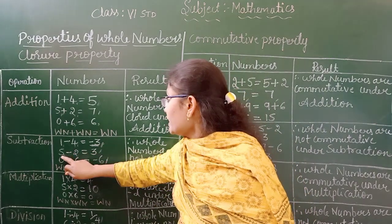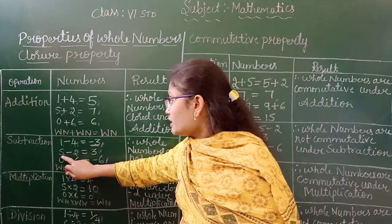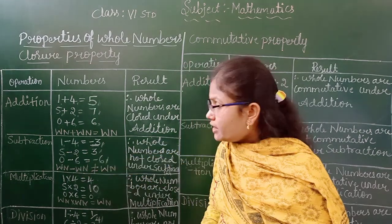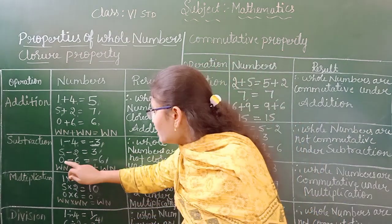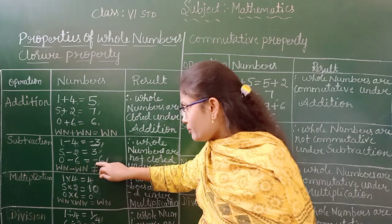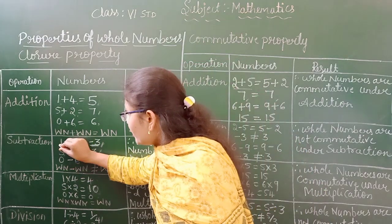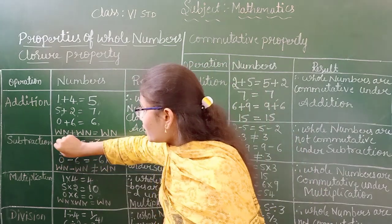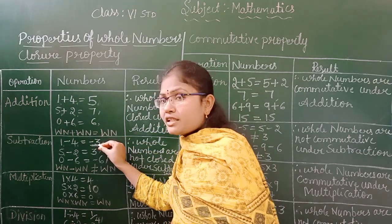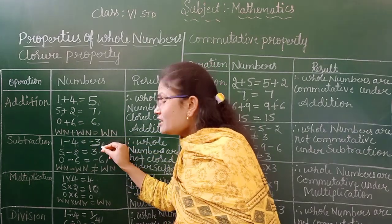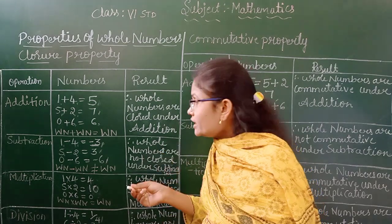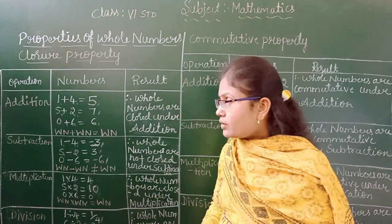Another example: 5 minus 2 equals 3. Another example: 0 minus 6 equals minus 6. When you subtract 1 minus 4, the result is minus 3. Is minus 3 a whole number? No, it is not a whole number — it is a negative number.